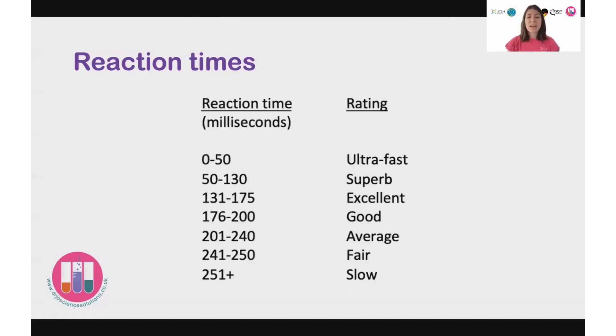And actually, if we have a look at this table, we can see where that puts me. So the 230 milliseconds of my first drop puts me as an average reaction speed there. But the slightly faster one puts me with a good reaction time. So you can translate that distance that the ruler dropped into your reaction time in milliseconds, and whether that is average or faster than average or below average. And then you can have a look at how maybe your reaction time compares to the rest of the population.